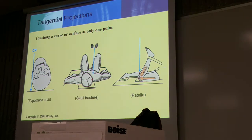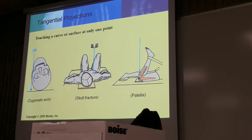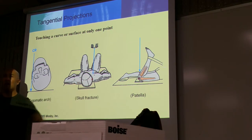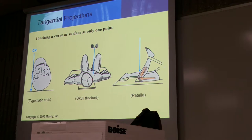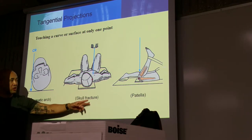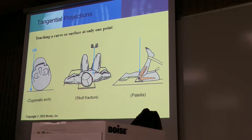Tangential is skimming of the body part. Here's an example of skimming of the cheekbone or the zygomatic arch. Here's an example of the skimming of the bony calvarian to visualize a certain fracture of the skull. And then we also have a tangential projection of the patella.